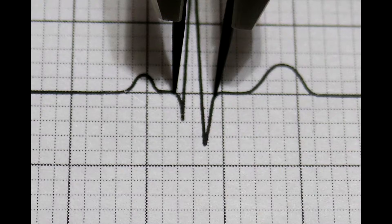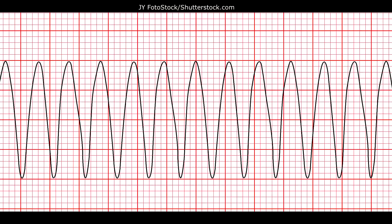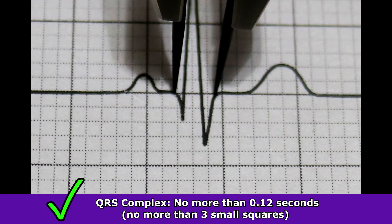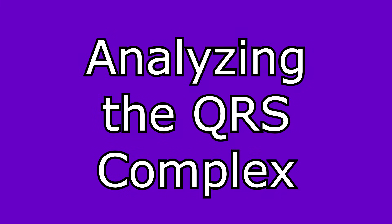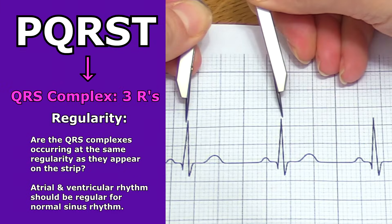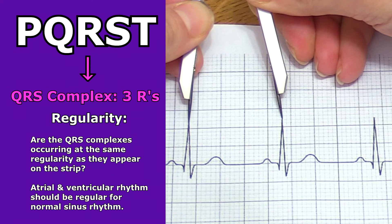The QRS complex should appear after every P wave and should not be very wide or narrow. Here we have VTAC — notice how wide that QRS complex is. When you measure it, it should be no more than 0.12 seconds, and you want to start measuring at the Q wave to the end of the S wave. Then apply the 3Rs to the QRS complex.